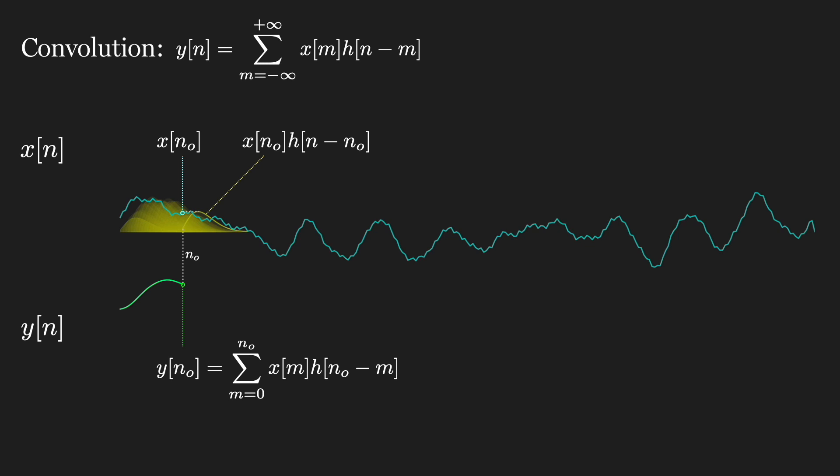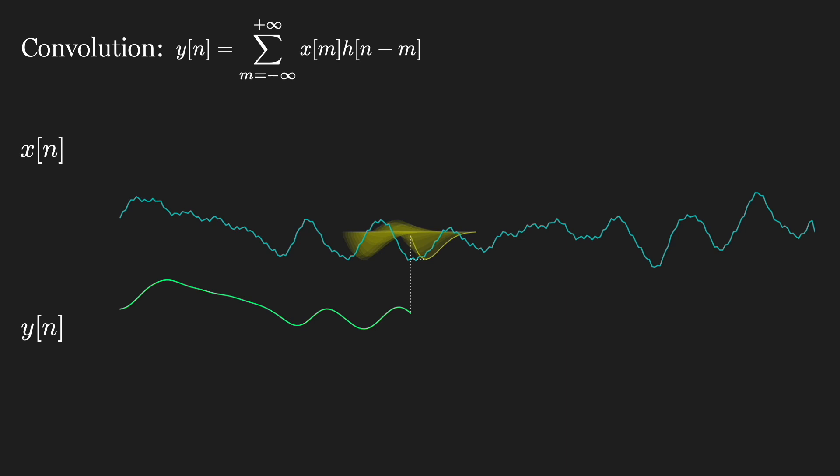Because the impulse response is causal, meaning it has no values before time 0, we know that y of n0 only depends on prior shifts of the scaled impulse response up to the current time. As we continue sliding the impulse response across the duration of the signal, we can see the overall smoothing effect on the output.